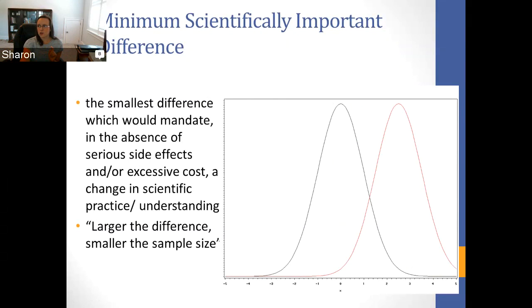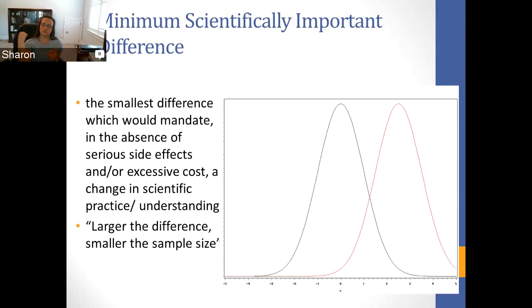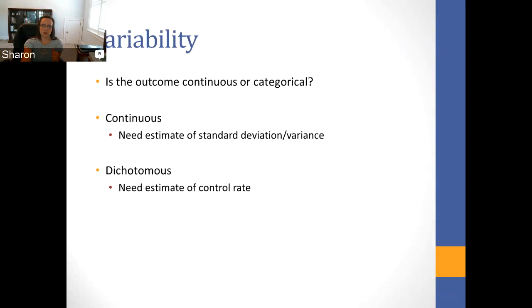There is a question about rare disorders — how to consider this when one studies rare disorders. There is a body of literature specific to rare disorders because we are often in a position where we can't study a sample as large as we need. In those cases, we really do need to make the most out of every patient we have access to. I'm not prepared to talk about the sample size calculations for those specifically, but there is literature in that area.